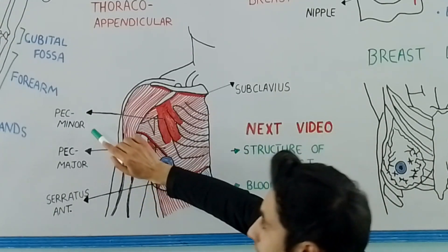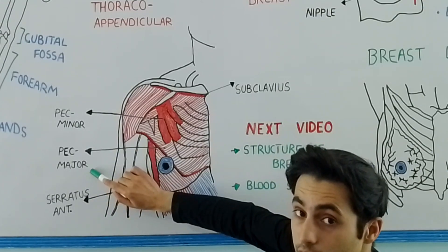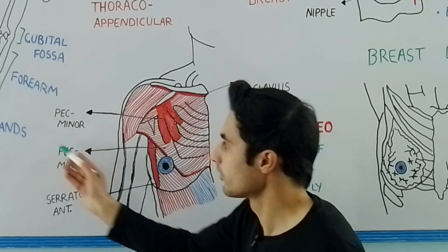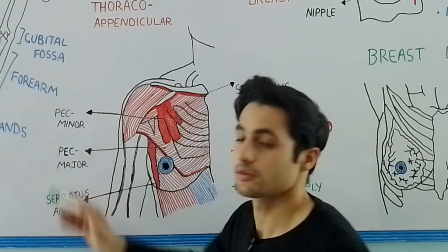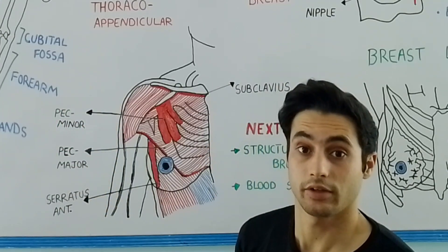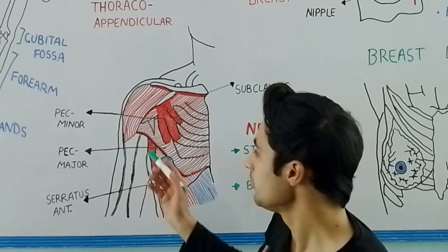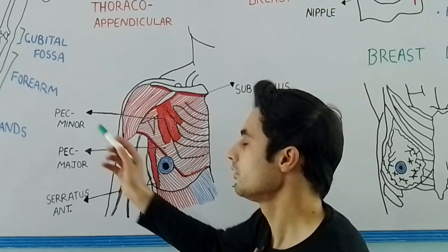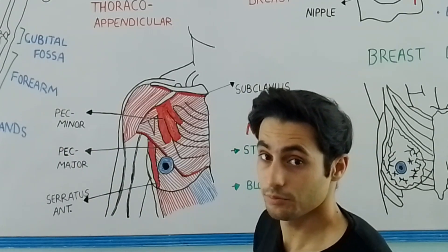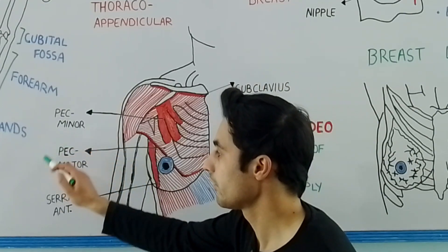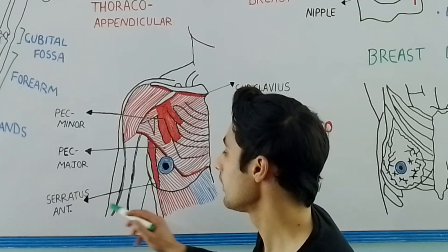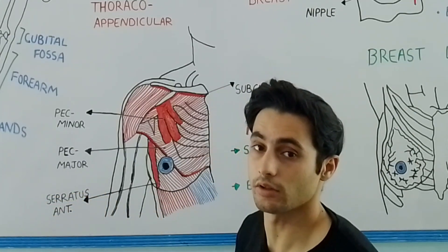The pectoralis major muscle is the most prominent muscle in your chest. If you remove the pectoralis major, you have the pectoralis minor muscle, which is smaller in comparison. Then you have the serratus anterior.